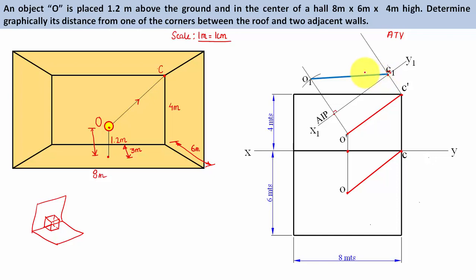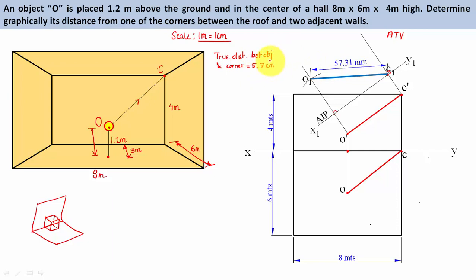When you join O1 with C1, you have the true length — the true distance between the object and the back corner — which works out as 57.31 millimeters, approximately 5.7 centimeters on the drawing. Since one centimeter equals one meter, the actual real distance is 5.7 meters. Since this is the top view, the angle made here is referred to as phi — the angle with the vertical plane — which works out as 32 degrees.